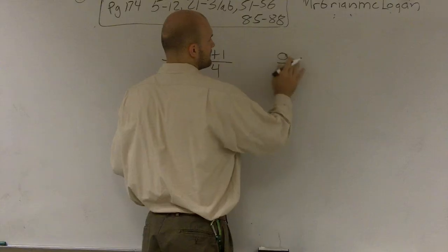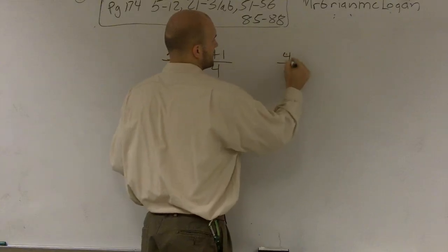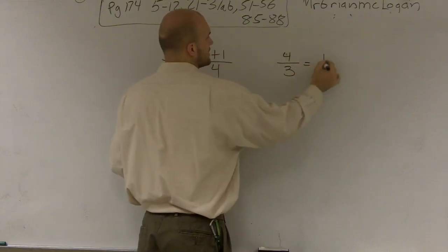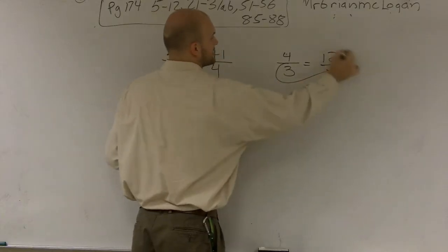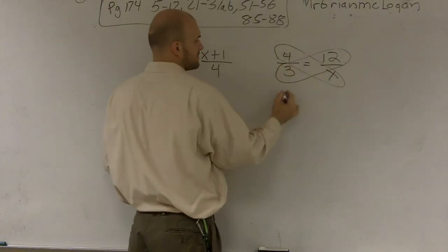We had like 4 thirds and you had like 12 is to x, right? And we did this cross product and it was pretty easy.